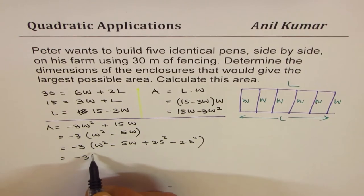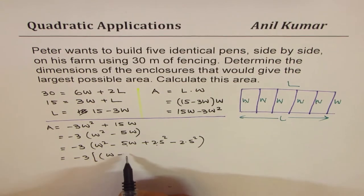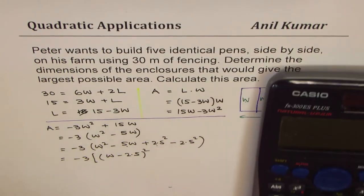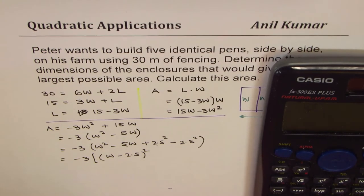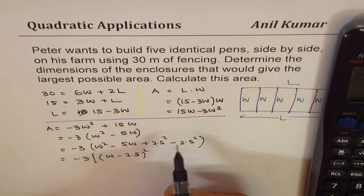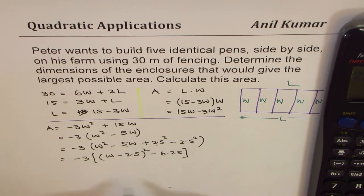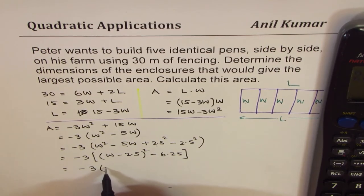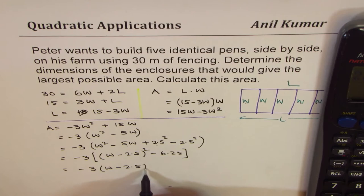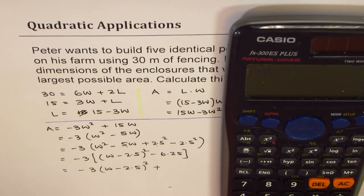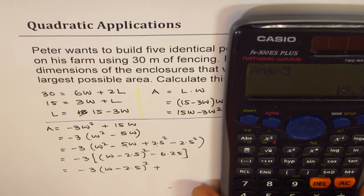That gives you minus 3 times, in square brackets, the first three terms give a perfect square: (W minus 2.5)². And 2.5 whole square is 6.25. Using the calculator, 2.5 whole square is 6.25. So we write negative 6.25. Now open the brackets: minus 3 times (W minus 2.5)² plus, multiplying by 3, negative times negative becomes positive, 18.75.